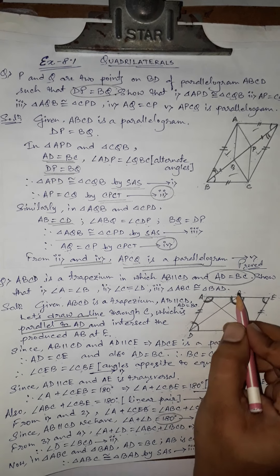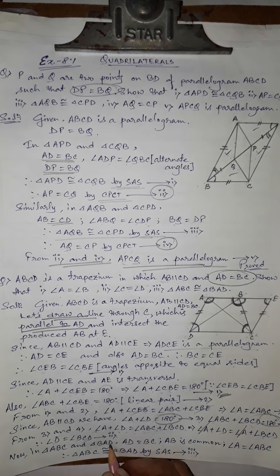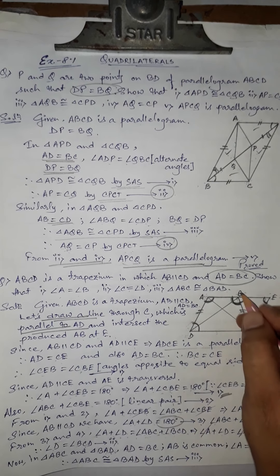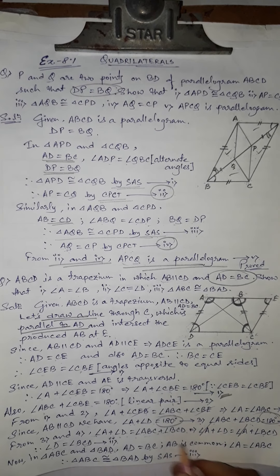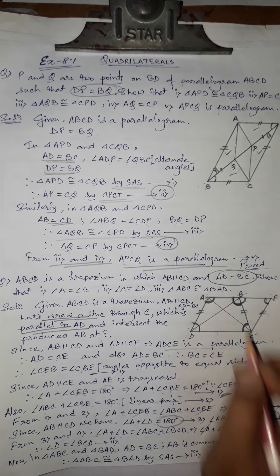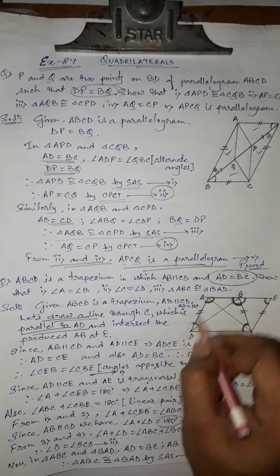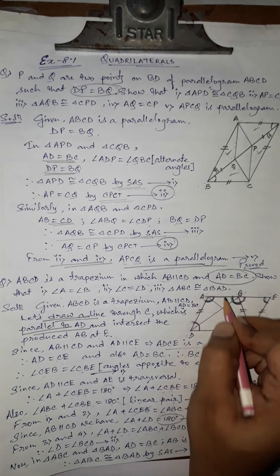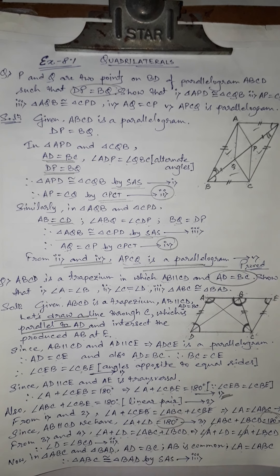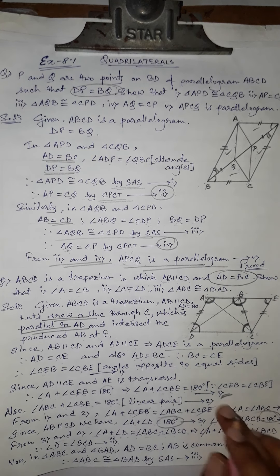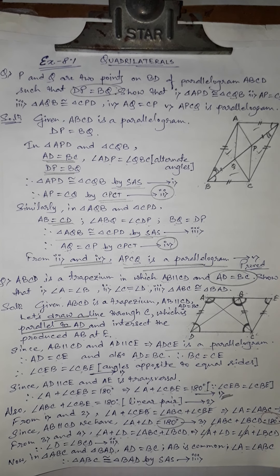For the last part, we prove triangle ABC and triangle BAD are congruent. AD equals BC is given. AB is the common side. Angle A equals angle B as proved. So by SAS, triangles ABC and BAD are congruent. This completes the exercise. In the next video we will start the midpoint theorem. Till then, Namah Shivaya.